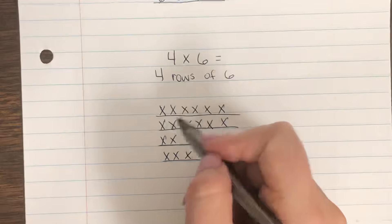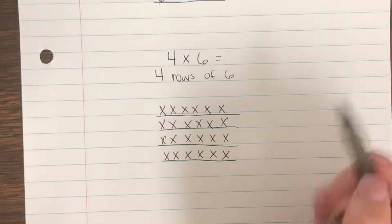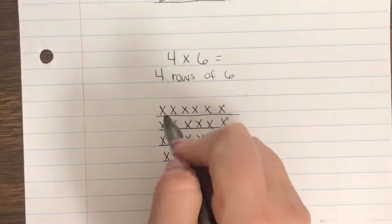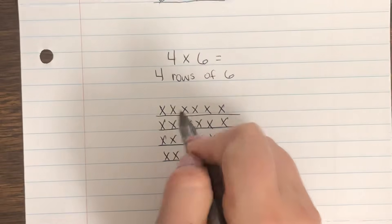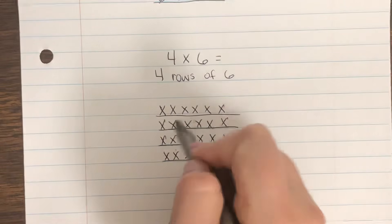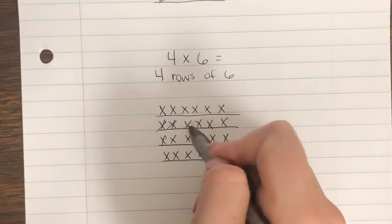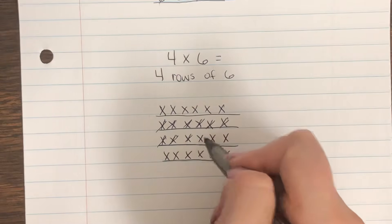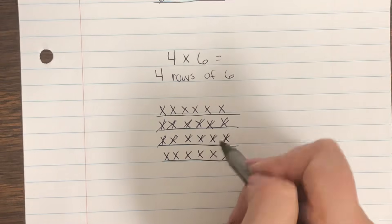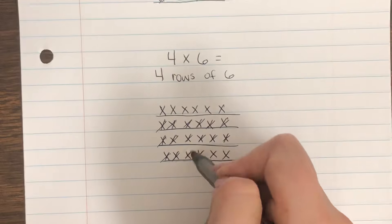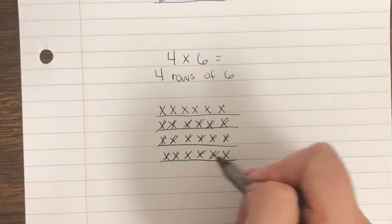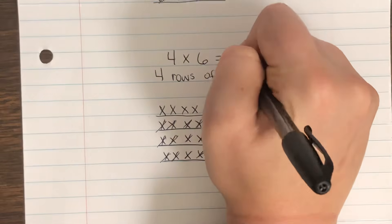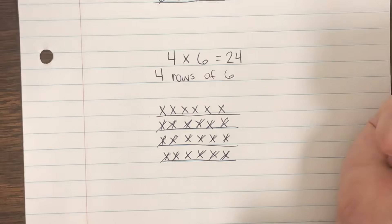To find the product, I like to mark them out as I go so I don't accidentally miss one. I know there are six on the first row, so starting from six: seven, eight, nine, ten, eleven, twelve, thirteen, fourteen, fifteen, sixteen, seventeen, eighteen, nineteen, twenty, twenty-one, twenty-two, twenty-three, twenty-four. So my product here is 24.